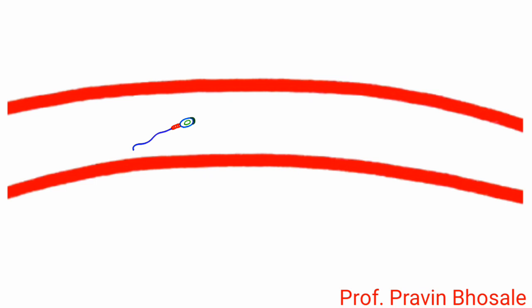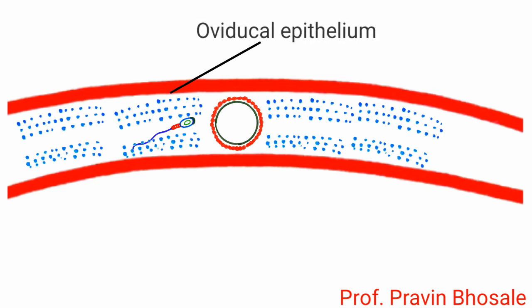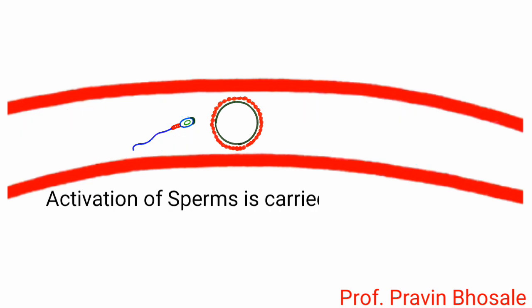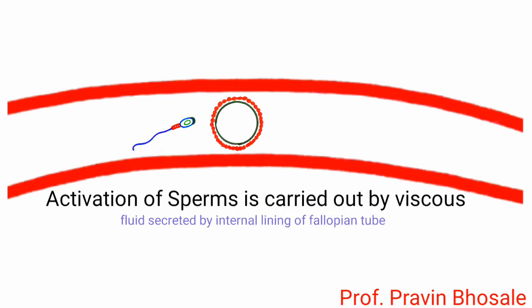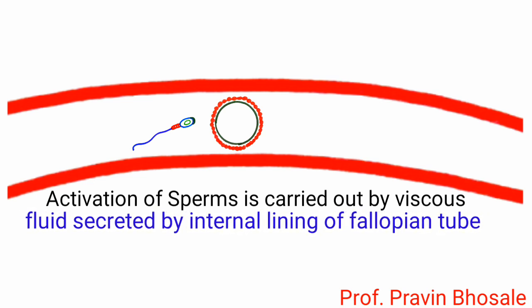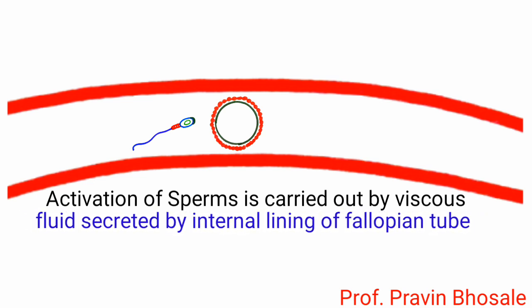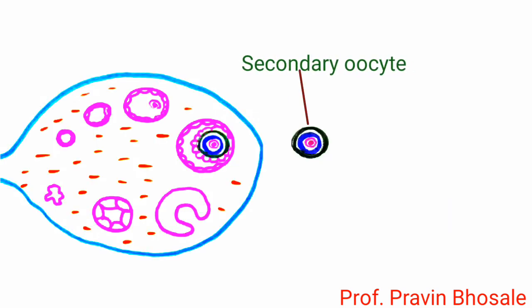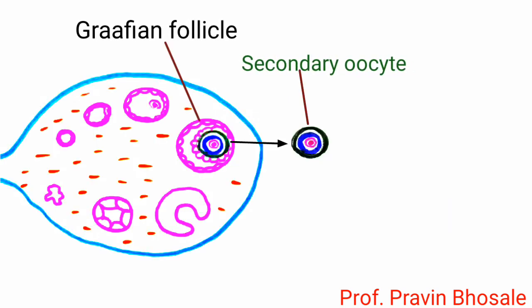The sperms in the female genital tract are made capable of fertilizing the egg by secretions of the oviducal epithelium. Activation of sperms is carried out by viscous fluid secreted by the internal lining of the fallopian tube. The secondary oocyte released from the mature Graafian follicle during ovulation is received by the fallopian tube.